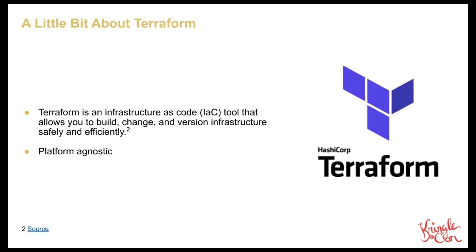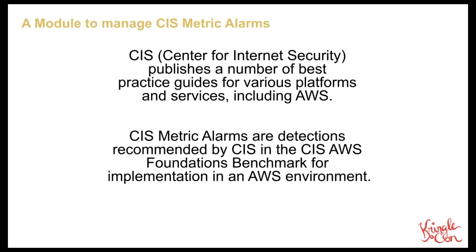Terraform is an infrastructure as code platform owned by HashiCorp. It is fairly platform agnostic and can support many different types of platforms and technology. To demonstrate the usefulness of Terraform, I will be walking you through an example which builds infrastructure in AWS to implement the metric filters and alarms found in the CIS AWS Foundations benchmark. Metric filters define the terms and patterns to look for in log data as it is sent to CloudWatch Logs. The alarms are used to create alerts for matches of the patterns defined in the metric filter. There are 14 metric filters and alarms that CIS recommends, and building these out by hand can be time consuming and tedious.